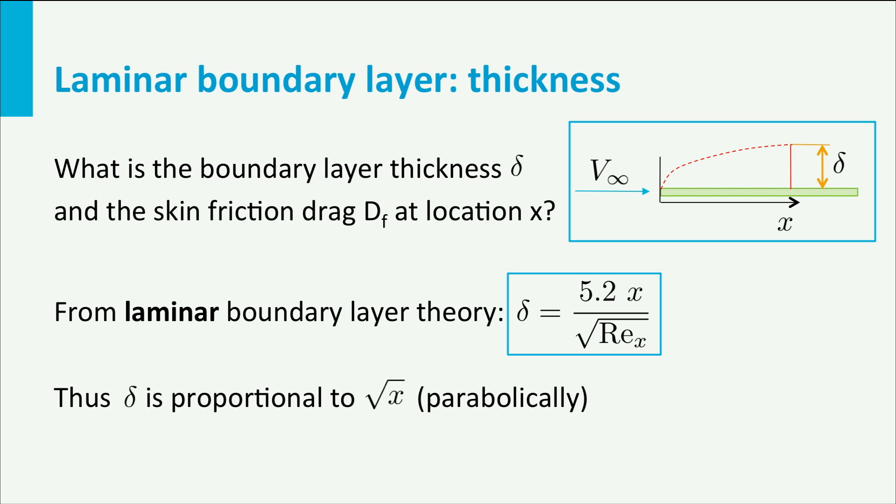So, starting at the leading edge of the plate, the boundary layer effect develops parabolically with the square root of x.